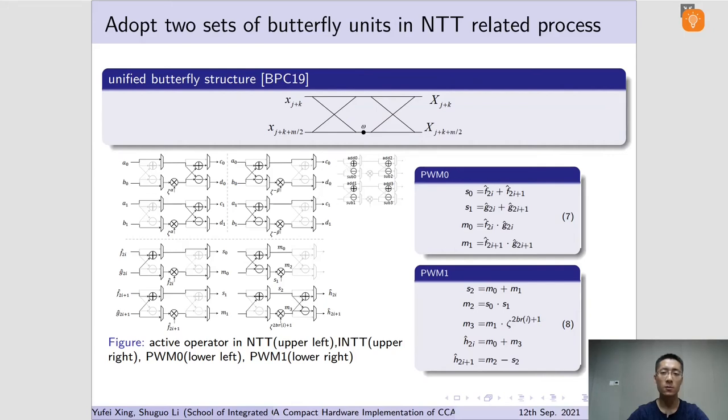Accounting for these two auxiliary procedures, a unified butterfly structure is adopted. With one multiplier and the other subtractor ahead of and behind it, several procedures can be adapted to this structure. In addition to normal use in NTT and inverse NTT, it can complete one point-wise multiplication in two cycles, denoted as pwm0 and pwm1. Compress and decompress procedures are supported as well.